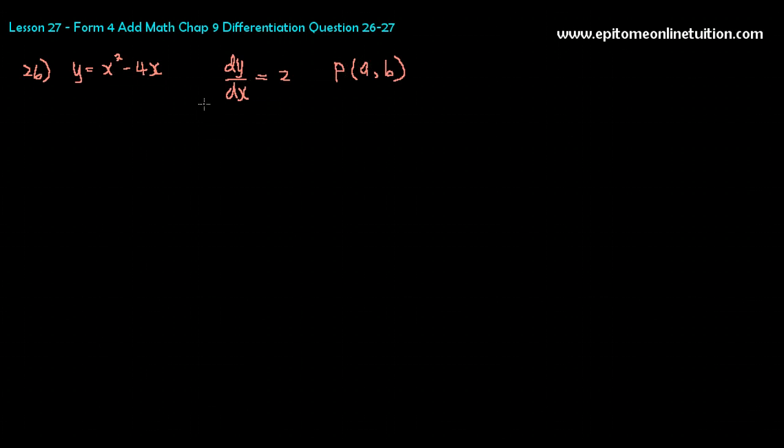So now, after you have written down all the information, let's tackle the question. Find the values of A and B. Just now, the values of A and B was inside the curve. Now the A and B is the coordinates of the point where the tangent is and the gradient is given to you.